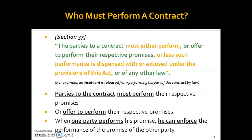The parties to a contract must perform or offer to perform their respective promises. So who must perform a contract? The parties to the contract themselves must either perform or offer to perform their respective promises.